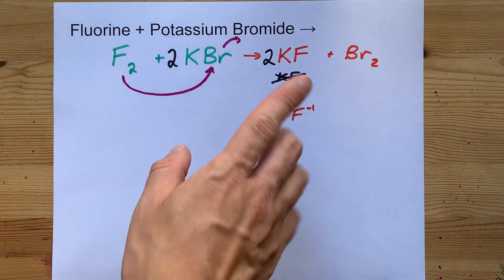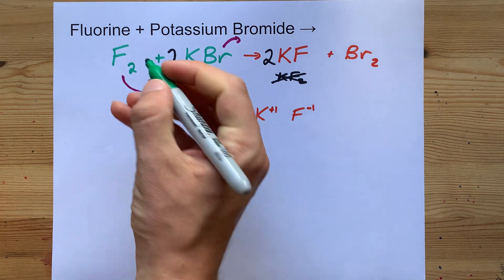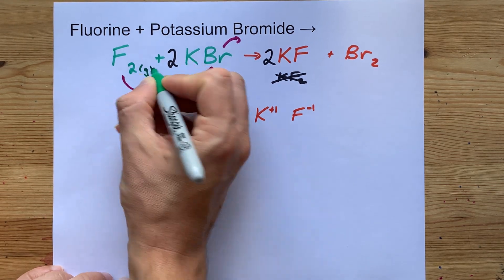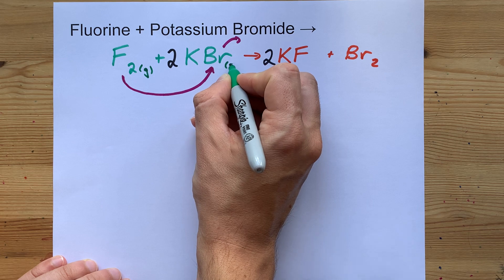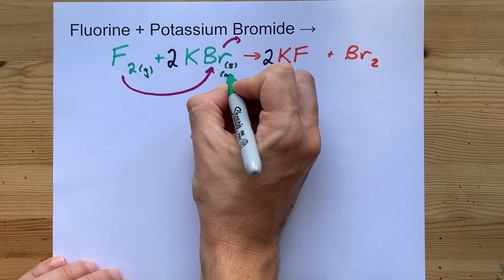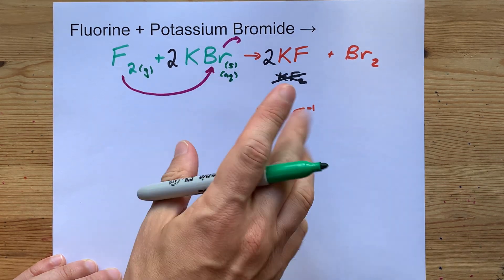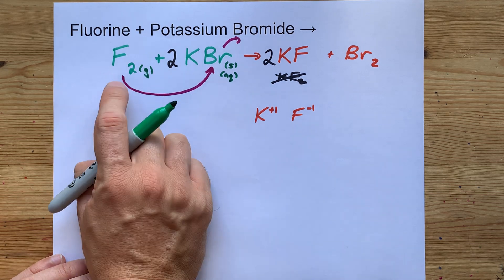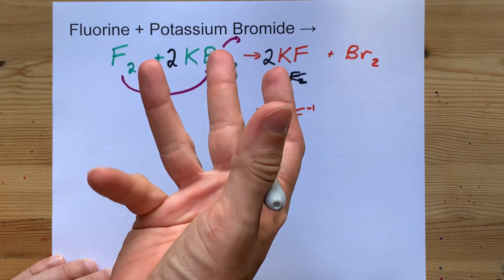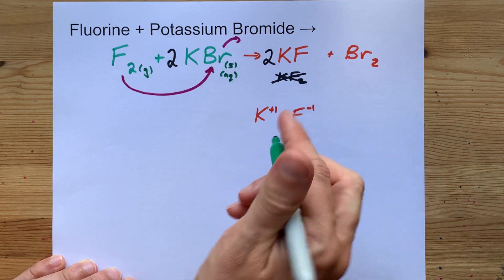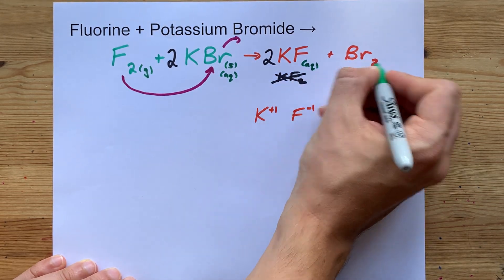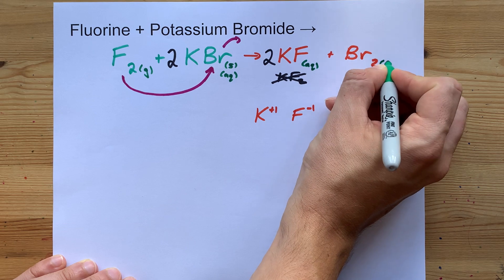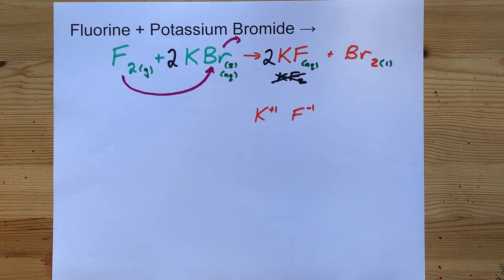Let me finish this off with some states. Fluorine is a gas at room temperature. KBr is probably a solid, but your teacher might want you to write aqueous. I don't like writing aqueous for fluorine reactions because fluorine reacts with water — so why wouldn't it just react with the water first? KF would then be aqueous or a solid, and bromine is a liquid at room temperature. Thanks for being with me, and best of luck.